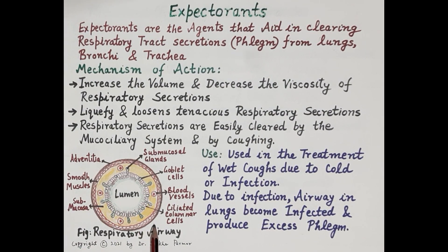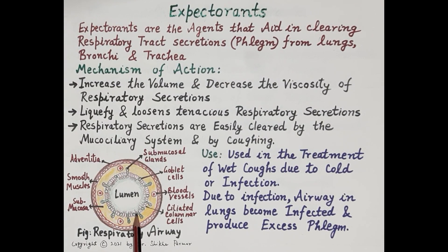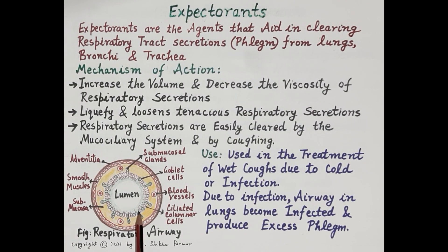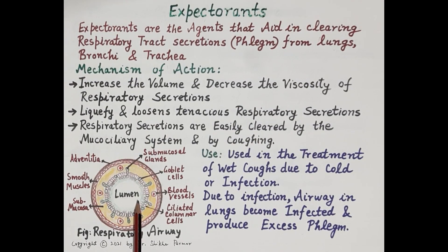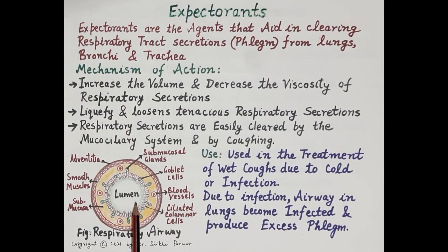During a cold or respiratory infection, the mucosa — the innermost lining of the lungs — becomes inflamed, and because of this inflammation it produces excess phlegm. There is excessive secretion of mucus by the goblet cells and submucosal cells. This excess phlegm produces blockage of the lumen of respiratory tubes, throat, and nose, leading to difficulty in breathing.